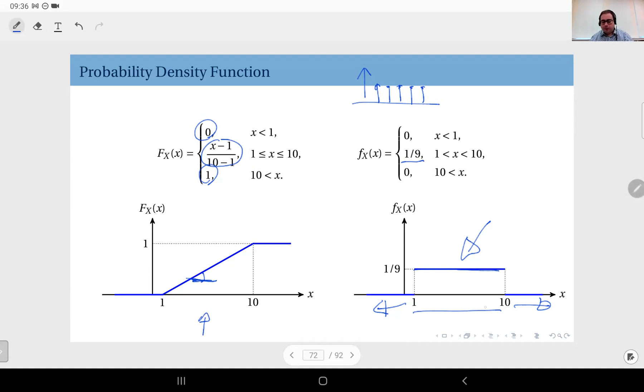And in between 1 and 10, the PDF is flat, therefore you expect to see any outcome in that region equally likely with all other possible outcomes. And in fact we call this special distribution the uniform random variable.